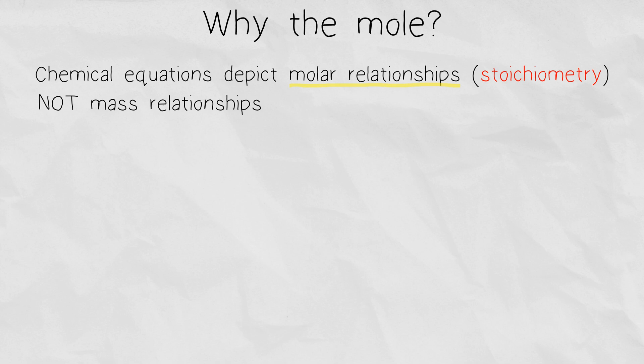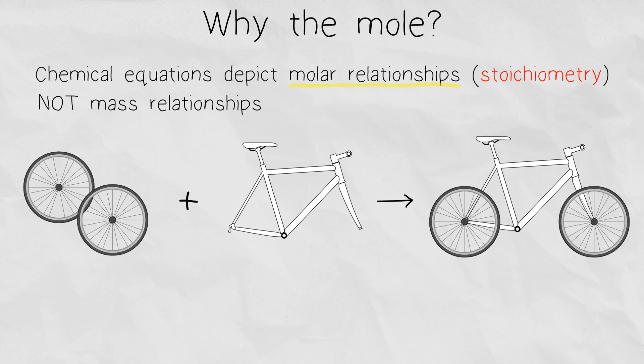Let's look at a simple example first. If you wanted to build a bicycle, you would need two wheels plus one body frame. So the ratio would be two wheels for one frame. What we care about to build a bicycle here is the count of our parts, not necessarily the mass. And the same principle applies in chemical reactions.